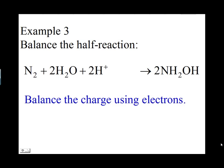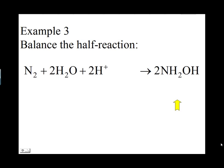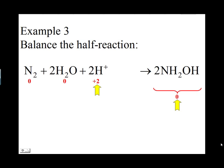The next step is to balance the charge using electrons. The right side contains neutral molecules with a zero charge. On the left side, N2 has a charge of zero, 2H2O have a charge of zero, and 2H+ have a charge of plus two. To make the plus two on the left equal to zero on the right, add two electrons. The net charge on the left is now zero, matching the right side.